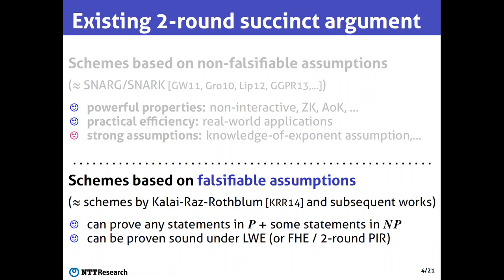These schemes are not as powerful as schemes based on non-falsifiable assumptions, but still they satisfy several nice properties — like they can prove any statement in P or even some statements in NP. And also they can be proven sound under standard assumptions like learning with errors, or more concretely, sub-exponentially hard homomorphic encryption or two-round private information retrieval systems. So essentially, we already have really good results on two-round succinct arguments based on falsifiable assumptions.